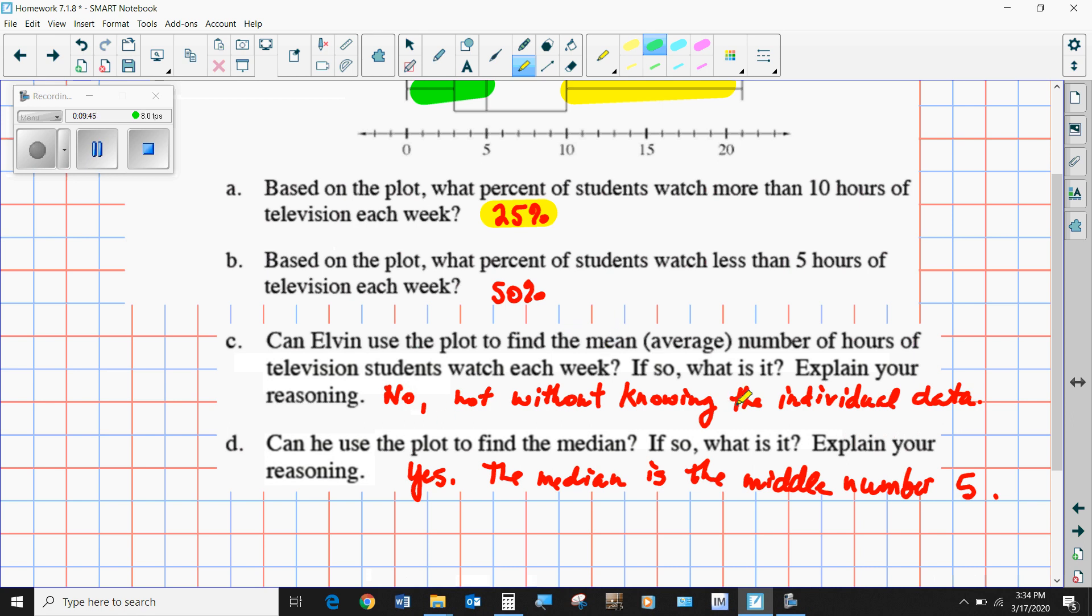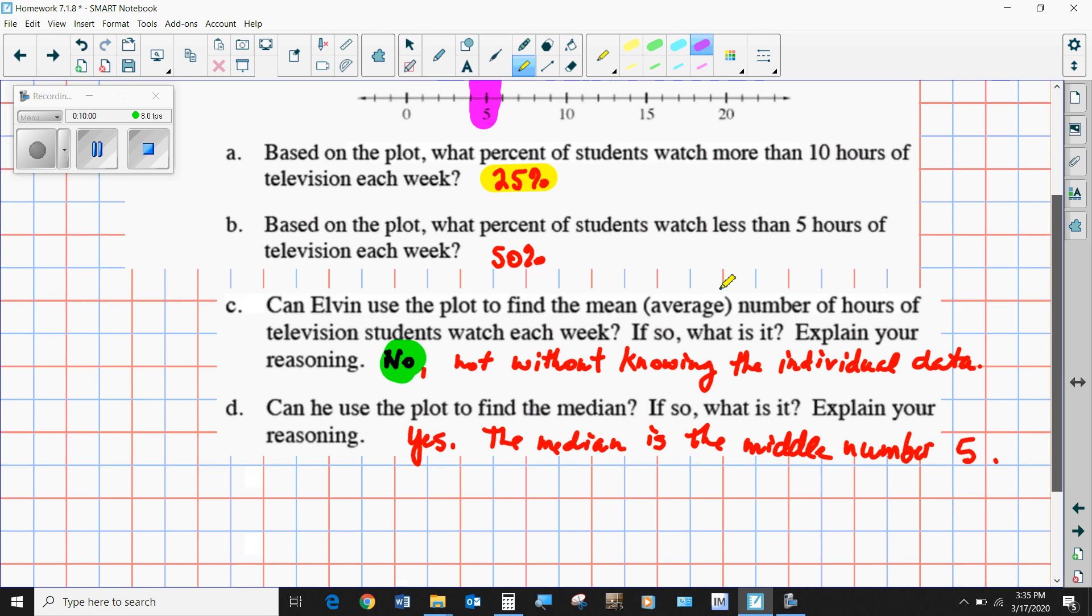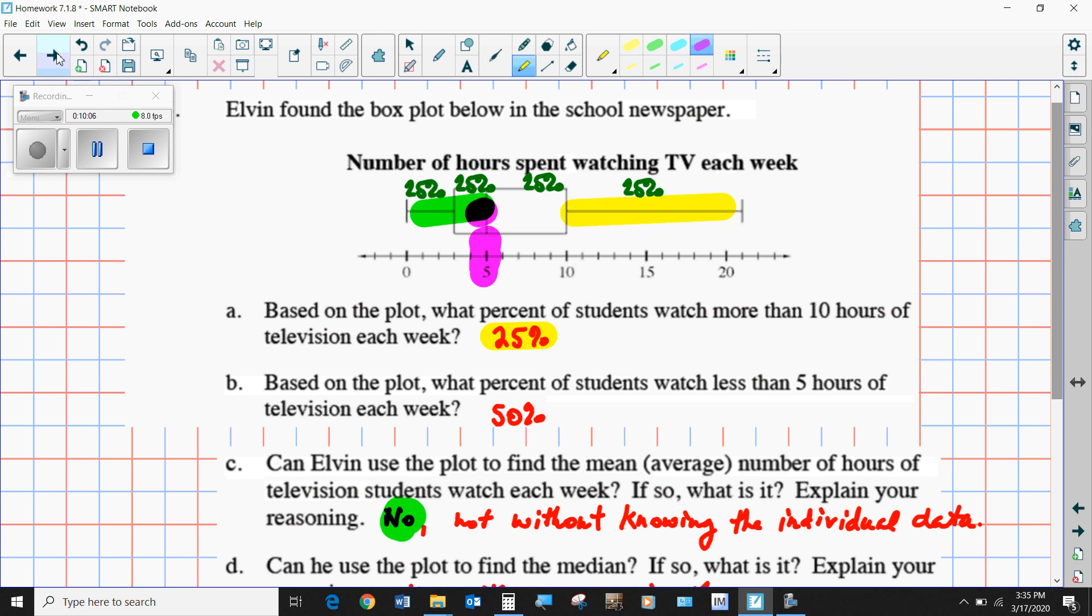Can Elvin use the plot to find the mean? No, you have to know all the individual numbers, and we don't know those from the box plot, so the answer is no. And can we use the box plot to find the median? Absolutely. That is a key component of the box plot. The median is this number right there. It's got to be the number 5. It's the number in the middle. Is that our last problem? And that is the last problem.